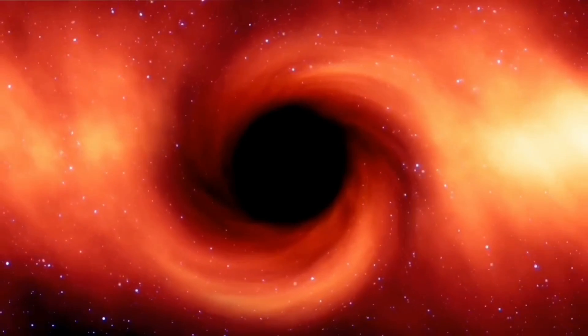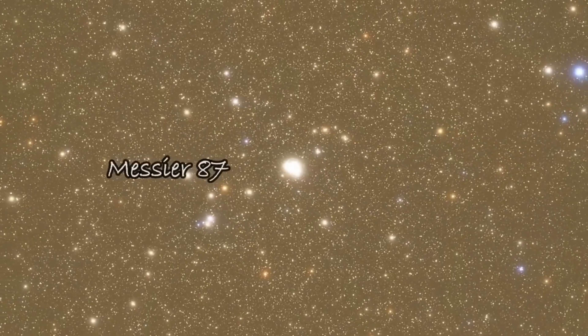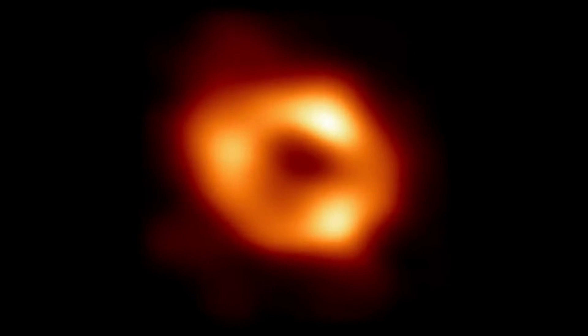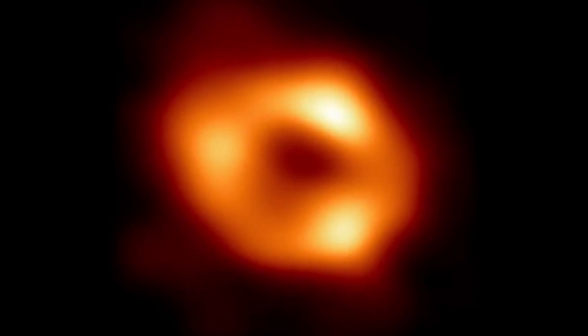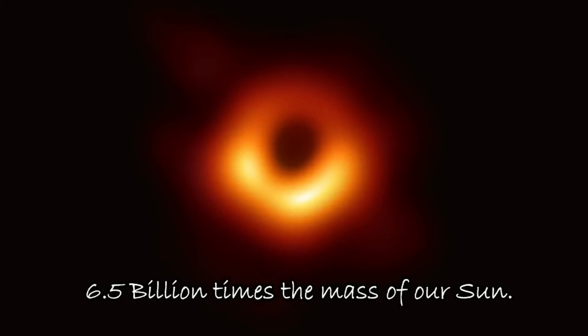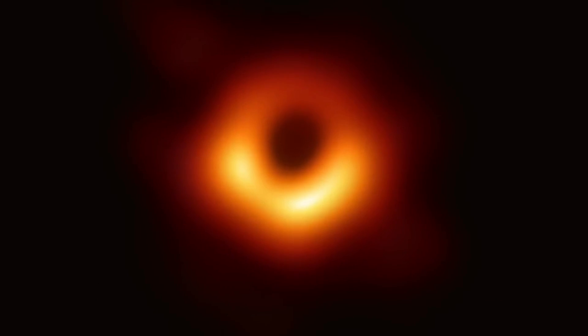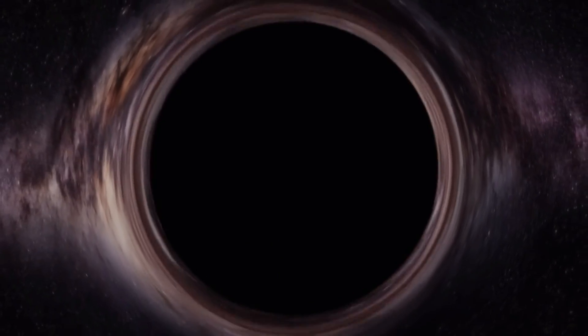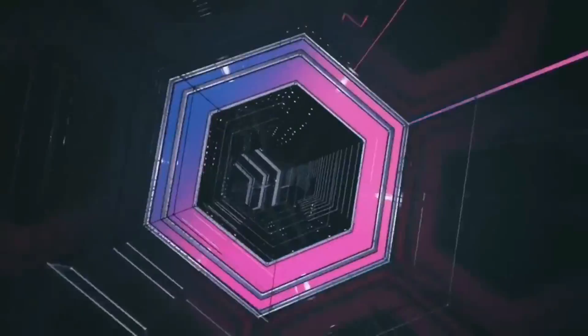When a massive star collapses and its core becomes compressed to an infinite density, black holes are thought to form. The origins of black hole theories can be traced back to the 18th century when John Mitchell, an English astronomer, proposed the existence of objects with strong gravitational fields.